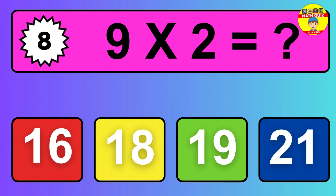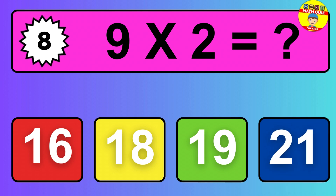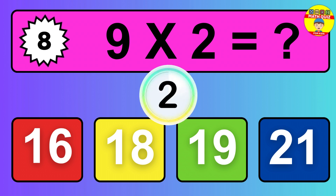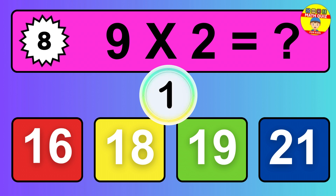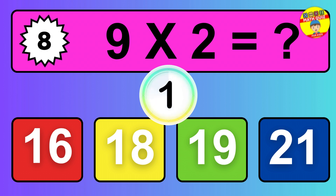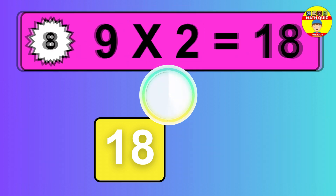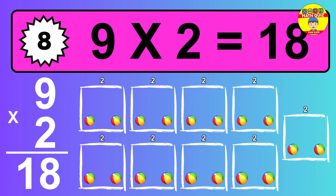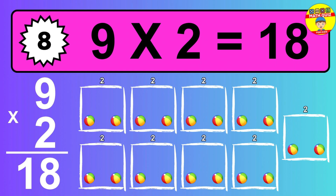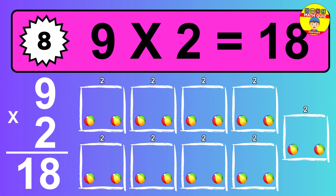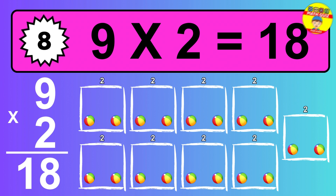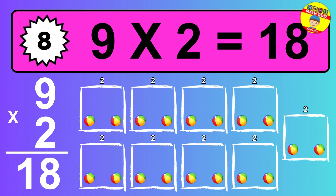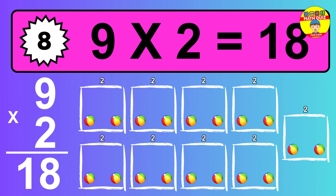Question 8. Nine times two equals what? So the answer is nine times two is eighteen. To calculate, we have nine groups with two balls each one. So how many balls do we have? Eighteen balls.